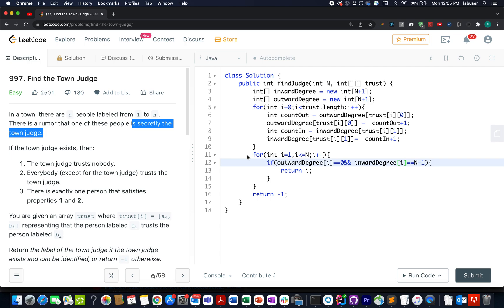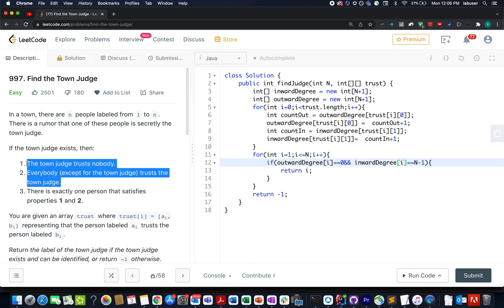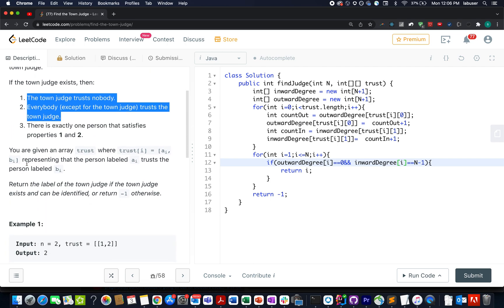Today's question is find the town judge. Here in this question, we are given a town and there are people labeled from one to N. There is a rumor that there exists a judge in this town. And how do we define a judge? A judge is a person who trusts nobody in the town. Also, everyone in the town trusts the judge.